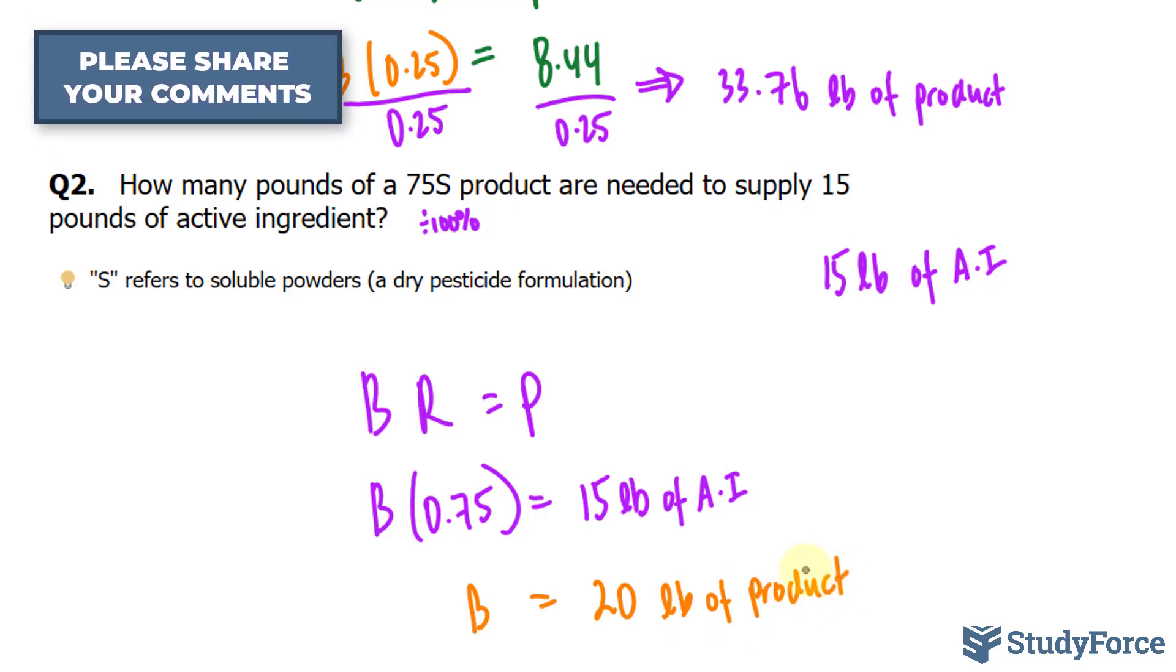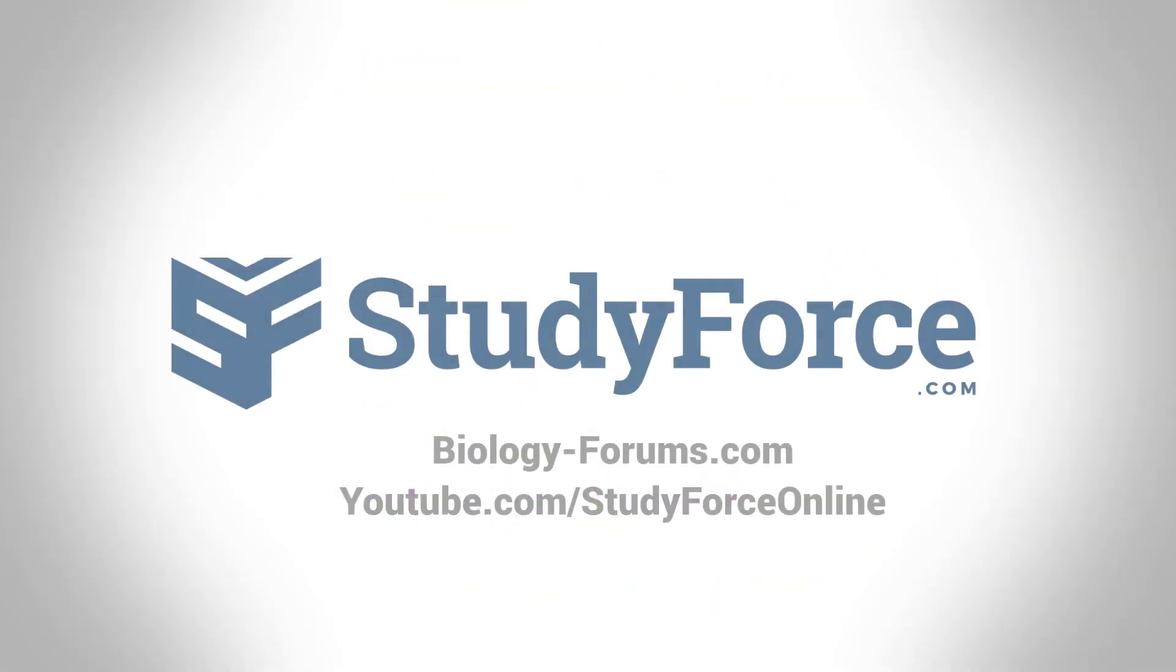Of this 20 pounds, 15 pounds of it is active ingredient, the rest is filler. If you have any further questions, please use the write-up in the description below. It contains a reference to all these examples plus their solutions, or otherwise use the comment section below.